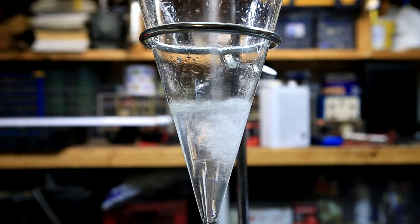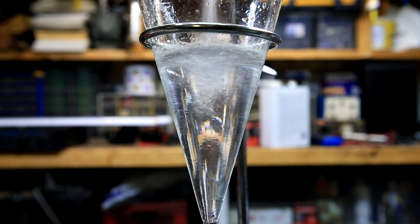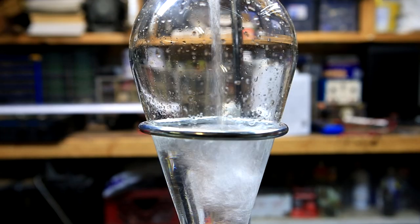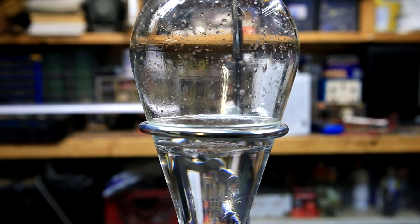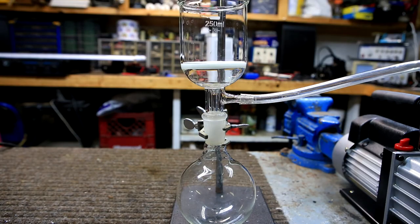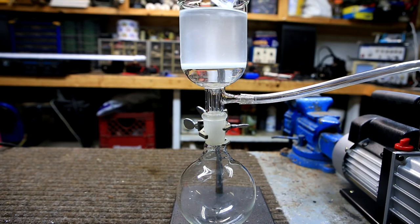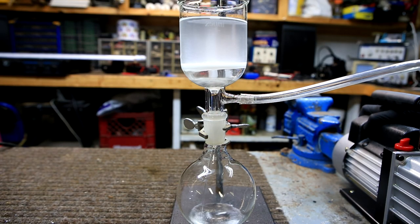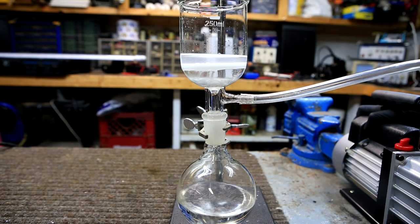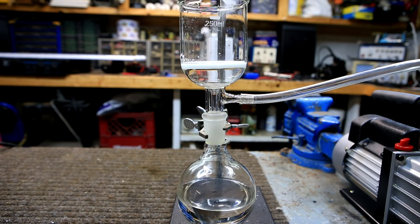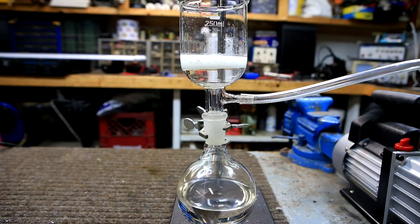The DCM washings were poured back into the separatory funnel, dried using saturated sodium chloride solution, and then drained into a flask containing calcium chloride. The calcium chloride was vacuum filtered off, and the solution was drained directly into a round bottom flask. The calcium chloride remaining in the flask was washed with a small amount of DCM.